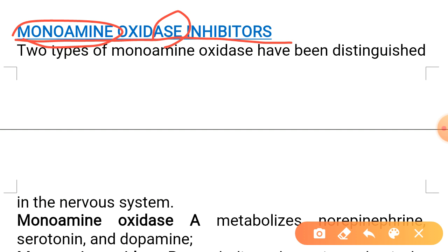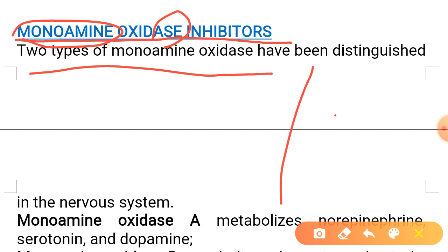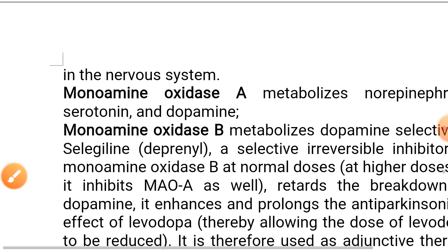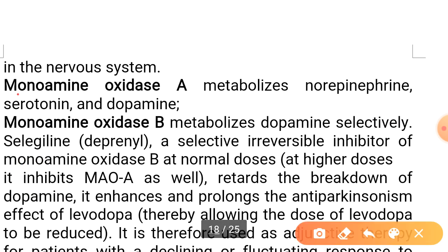We have different types of neurotransmitters, and the monoamine type includes norepinephrine, epinephrine, and dopamine. Monoamine oxidase is the enzyme responsible for the degradation, breakdown, or metabolism of monoamine-type neurotransmitters. There are two types: monoamine oxidase A and monoamine oxidase B.